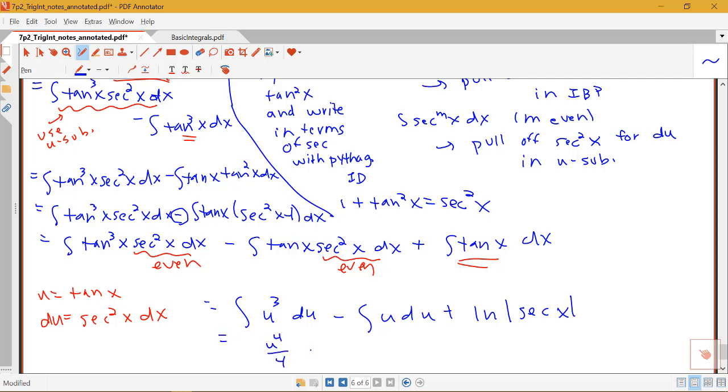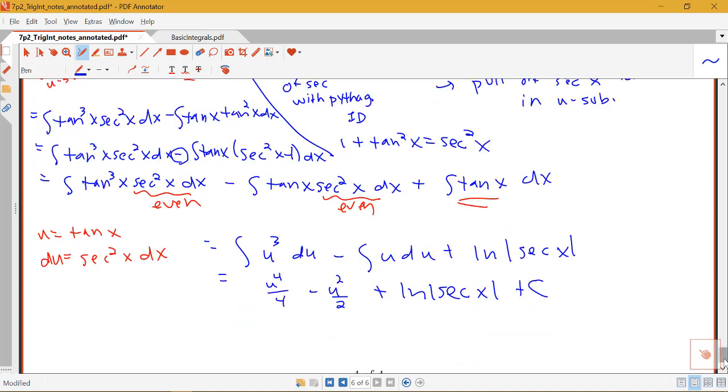I'm not going to add a plus c quite yet because I haven't done all my antiderivatives. So this is going to be u to the fourth over four. We'll have minus u squared over two plus log absolute value of secant x. And now I'm going to go ahead and add that plus c.